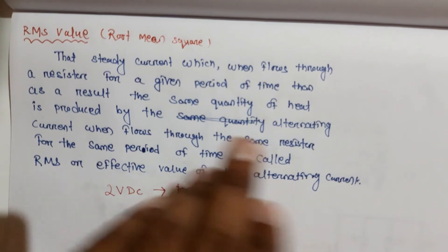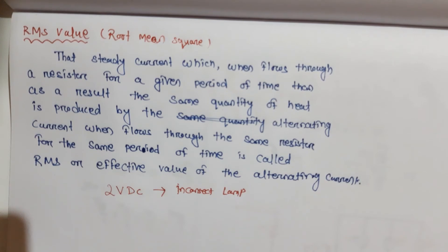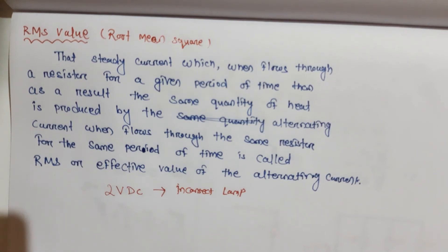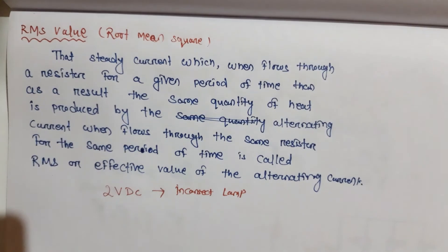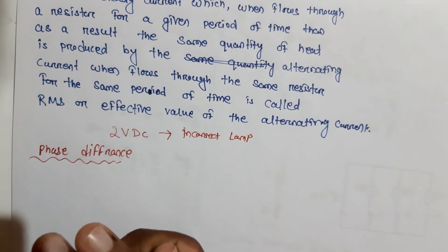For example, if we supply a steady DC current to a resistor for one hour and it produces some heat, the value of alternating current that produces the same heat in the same time is the RMS value. You can also call it the DC equivalent value of the alternating current.